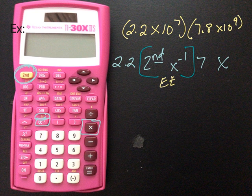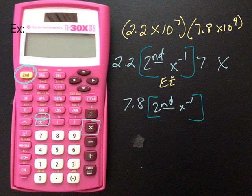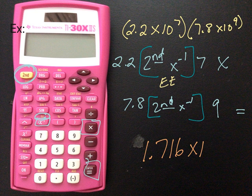Then you're going to hit the times button. Times, then you do the same thing. 7.8 second, X to the negative first, and my exponent is 9. And then you hit equals, right, or enter, and that will give you an answer of 1.716 times 10. I can't read my handwriting, 17th.